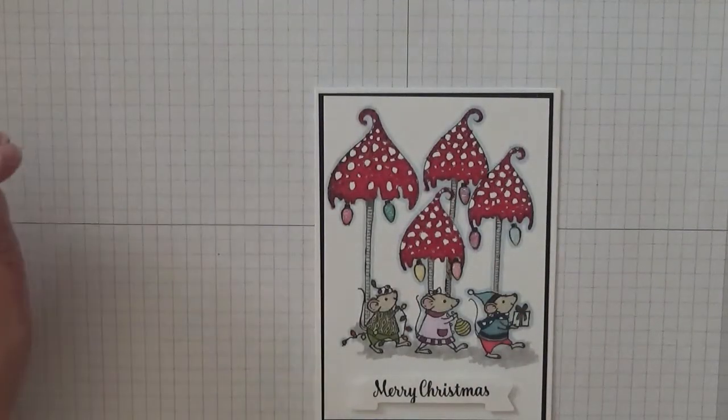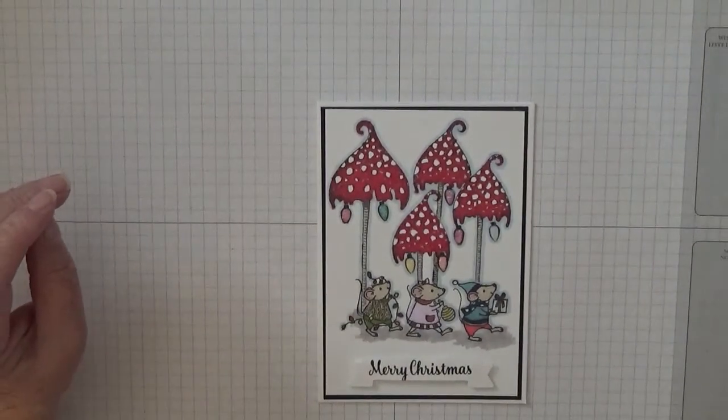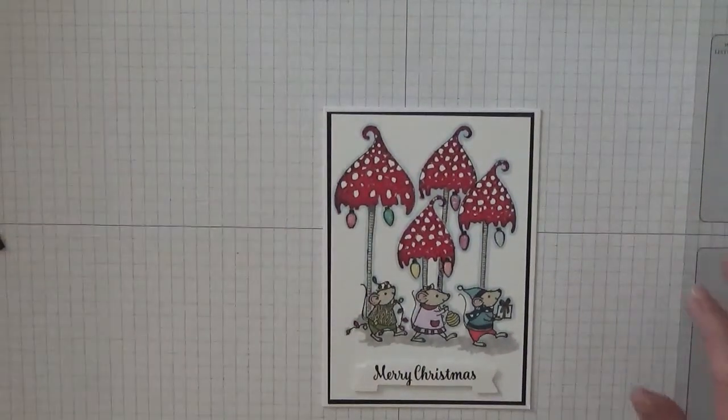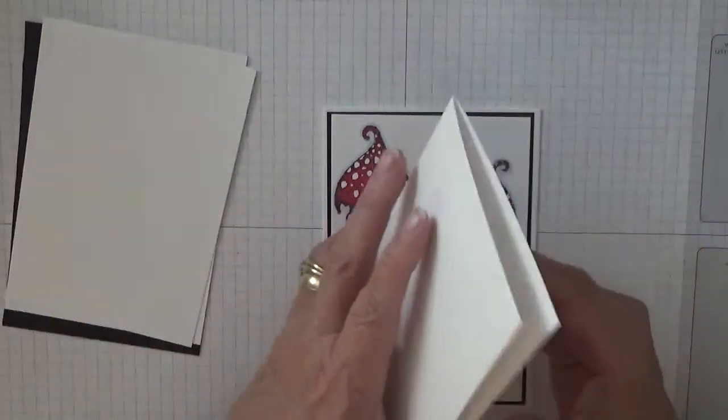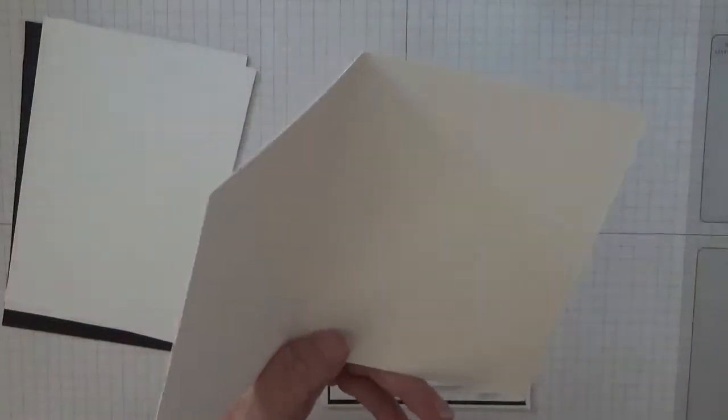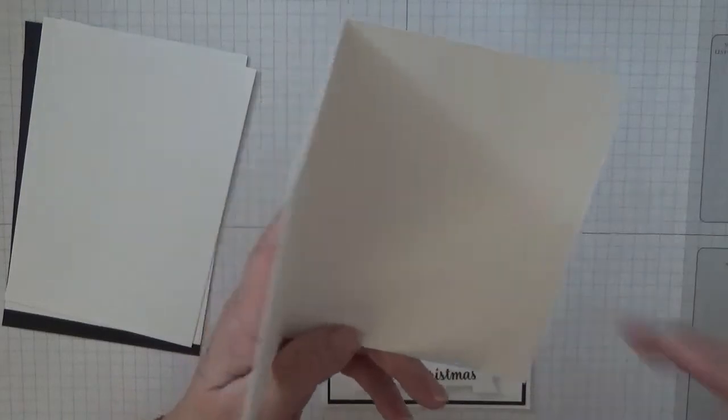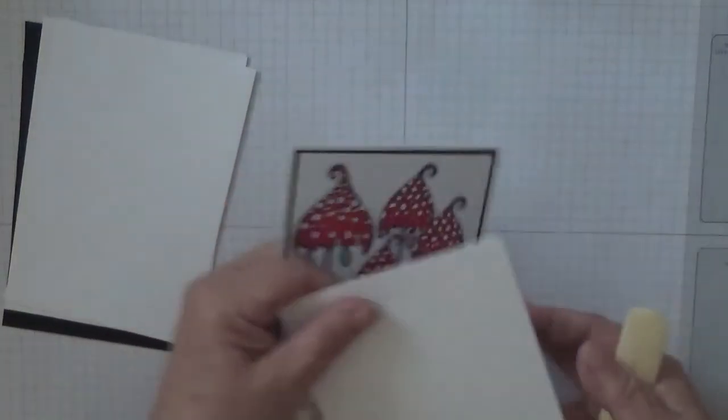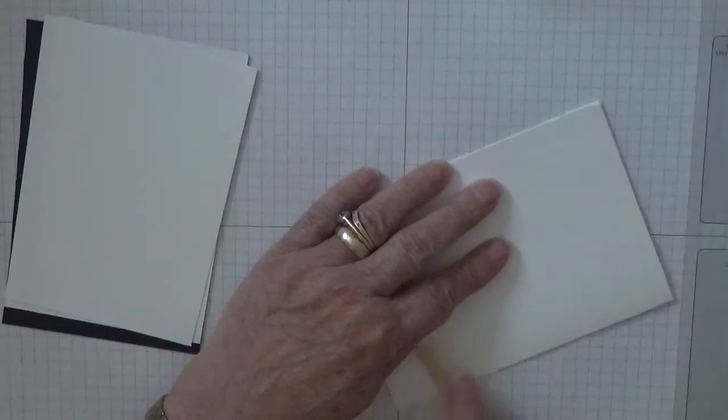To make this card I've got a white card base of eight and a quarter by five and seven eighths, scored at four and one eighth, folded in half and burnished.